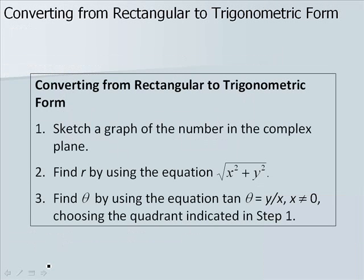When converting from rectangular to trigonometric form: first, sketch a graph of the number in the complex plane. Second, find r by using the equation r equals the square root of x squared plus y squared. Third, find theta by using the equation tangent of theta equals y over x, where x is not equal to 0, and choose the correct quadrant based on the graph from step 1.